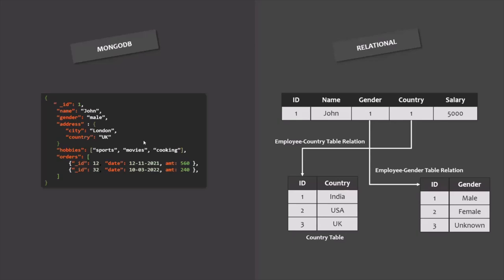Finally, each document created in MongoDB will have an object ID. It will have an underscore ID field that gets assigned an object ID, which is created automatically — we don't have to provide it. Of course, it is possible to manually set the value for the underscore ID field, but if you don't, MongoDB will automatically generate and assign an object ID. This was a brief overview of MongoDB, enough to get us started. If you want to learn MongoDB in depth, I have a course on this YouTube channel — I will share the link in the description.